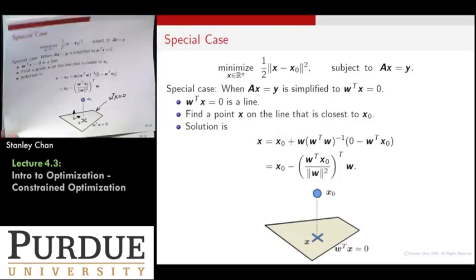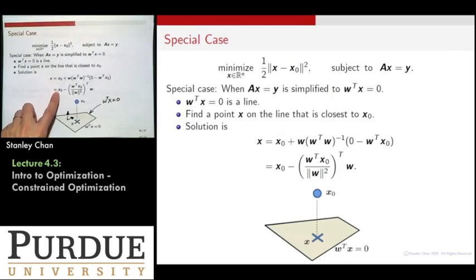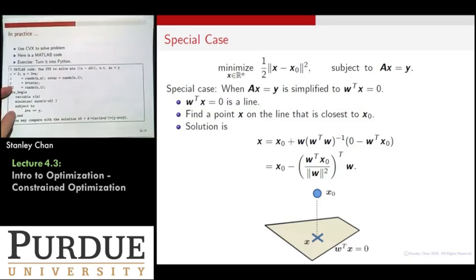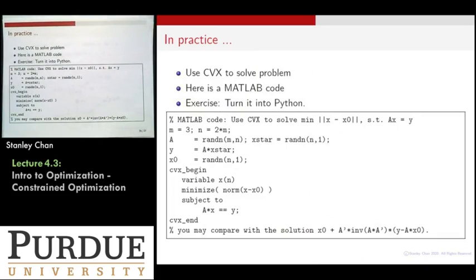The solution says that the x has to be equal to x0, the original point, minus, there's a constant here, so this is pretty much like a constant, because there shouldn't be any, there's no transpose here. So it's a constant times the W, so you're traveling along the W direction down to your plane. Now, if you don't trust me, it's okay.